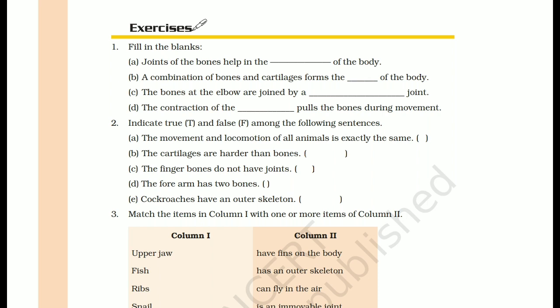Statement (c) is FALSE. Statement (d): the forearm has two bones. The forearm — meaning the arm from elbow to wrist — does indeed have two bones. So this statement is TRUE.